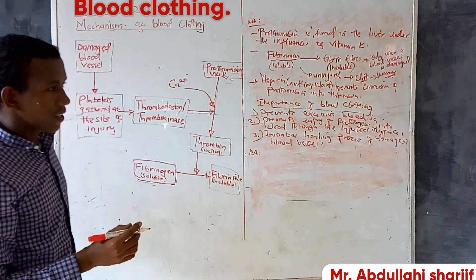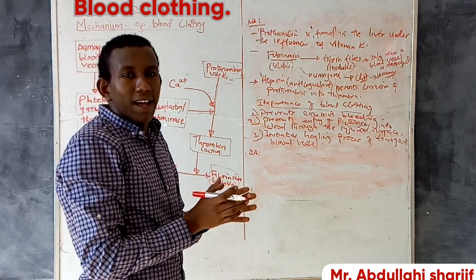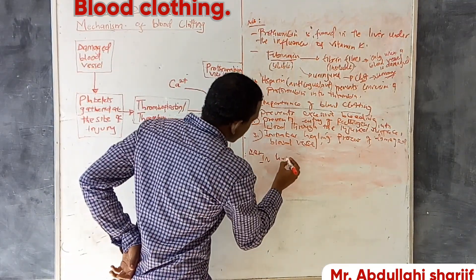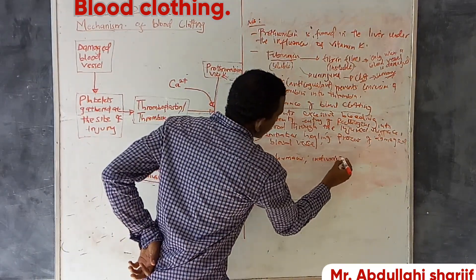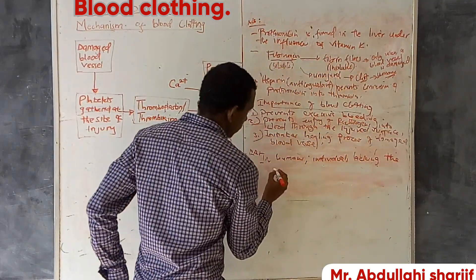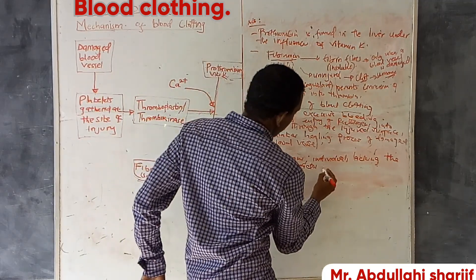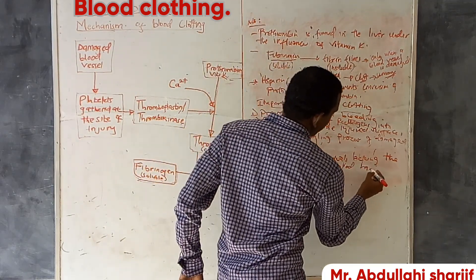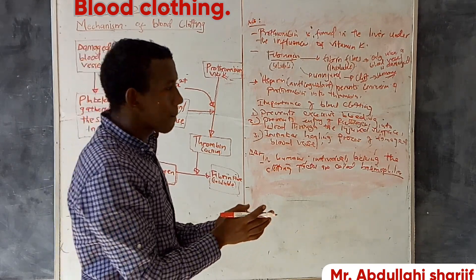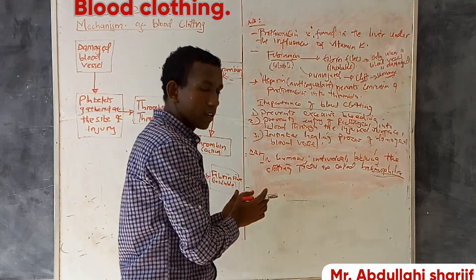There are some individuals that when they have even a minor cut, they bleed excessively. These are individuals lacking the clotting factor. In humans, individuals lacking the clotting factor are called haemophiliacs — this condition is called haemophilia. This is the end of our lesson.